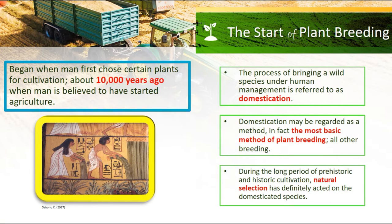The start of plant breeding began when man first chose certain plants for cultivation. It began about 10,000 years ago when man is believed to have started agriculture. Plant breeding starts with domestication, and domestication is the process of bringing a wild species under human management. Domestication may be regarded as the most basic method of plant breeding.